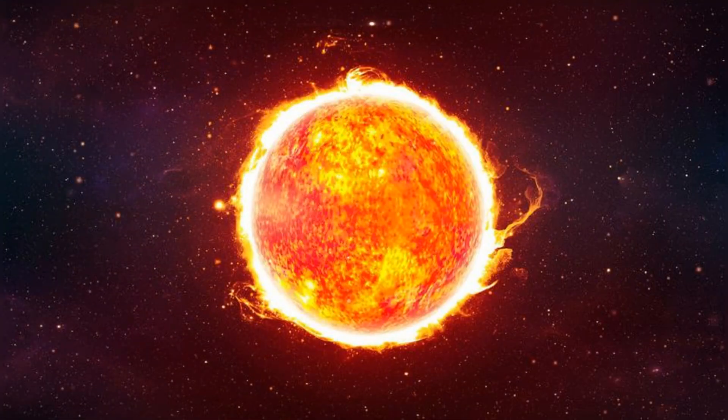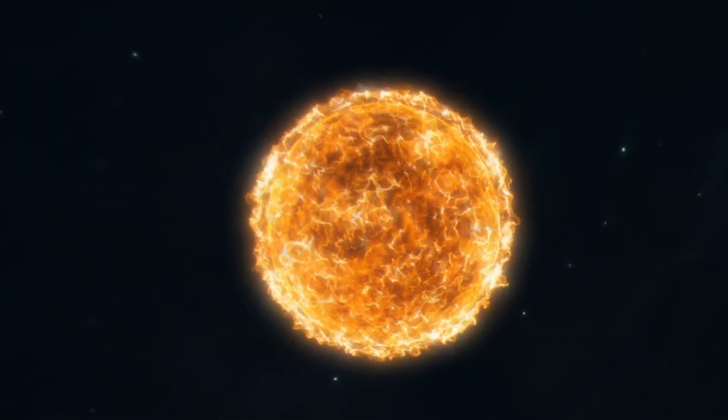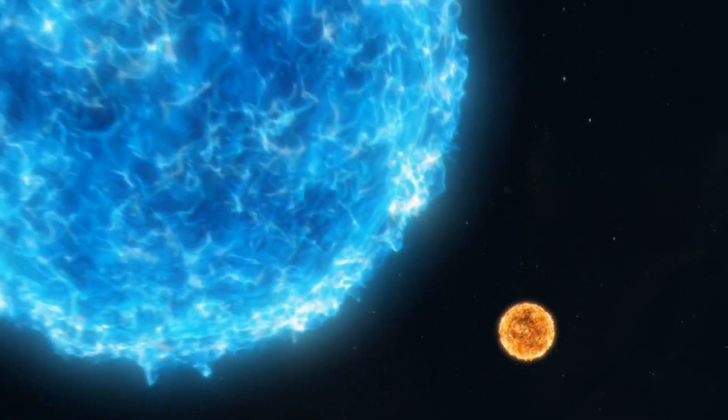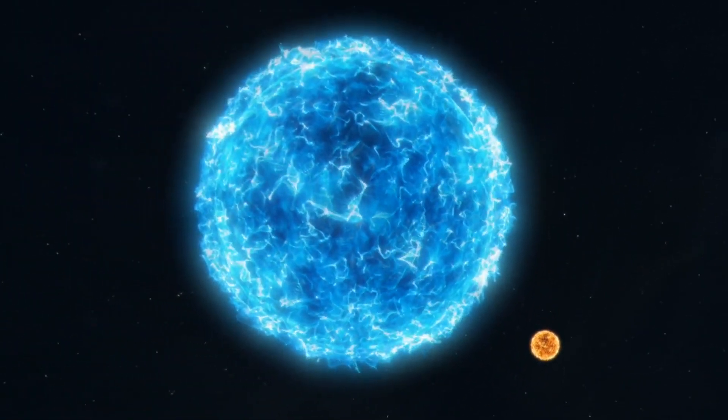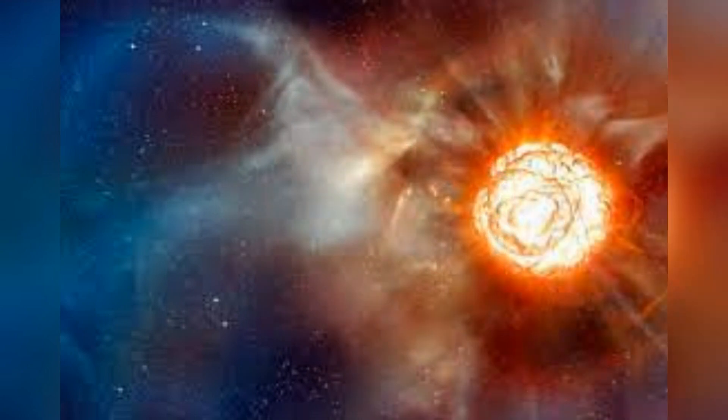Nestled within Orion, Betelgeuse stands as one of the most luminous and massive stars observable from Earth. With a radius approximately 950 times that of our Sun, if placed at the center of our solar system, it would stretch beyond Jupiter's orbit. This immense size comes with a significant cost. Betelgeuse burns its nuclear fuel at a prodigious rate, leading to a relatively short lifespan.